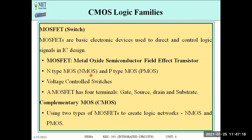There are two types of MOSFETs: NMOS and PMOS, and these are voltage-controlled switches because they are controlled through voltage. MOSFETs have four terminals: Gate, Source, Drain, and Substrate. In complementary MOS (CMOS), both NMOS and PMOS are used together to create a logic network, so our focus must be on how each behaves — when will NMOS be on, and when will PMOS be on.